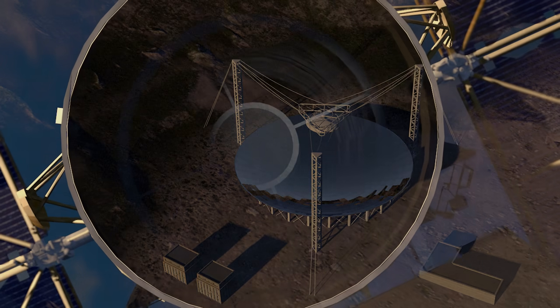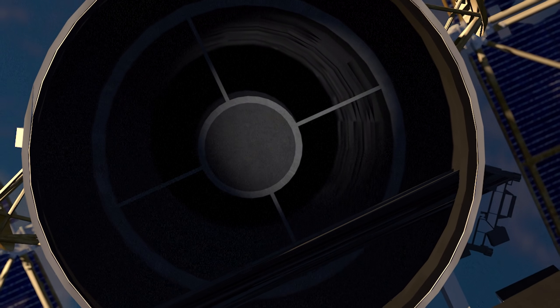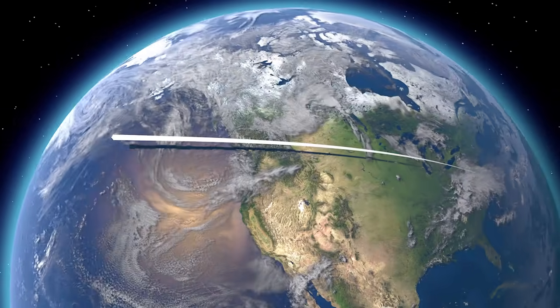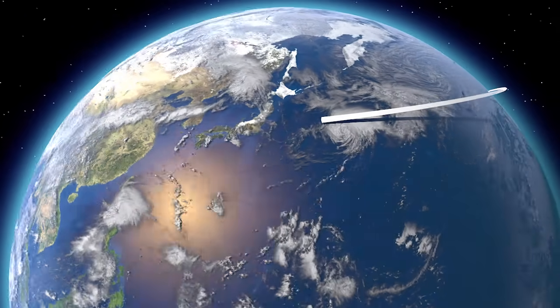It can see objects with an angular size of 0.05 arc seconds. This is like standing in Washington DC and being able to spot a firefly as far away as Tokyo.